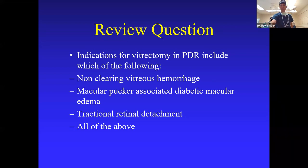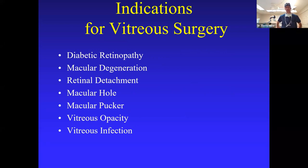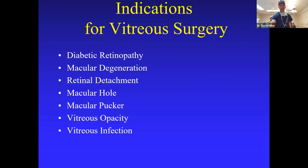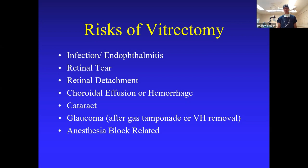Indications for vitreous surgery came right off one of my previous CyberSight talks — you can find the basics of vitrectomy surgery series in the CyberSight library. Indications include diabetic retinopathy, macular degeneration, retinal detachment, macular hole, macular pucker, vitreous opacities, and vitreous infection. Risks of vitrectomy surgery include infection, retinal tearing, retinal detachment, choroidal effusion or hemorrhage, cataract, glaucoma — especially after gas tamponade or vitreous hemorrhage removal — and anesthesia block-related complications.